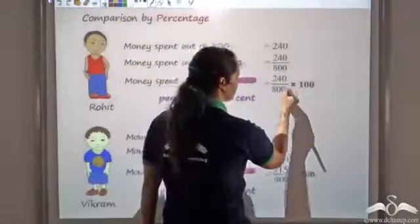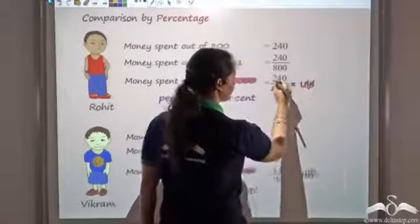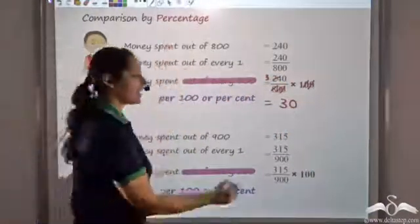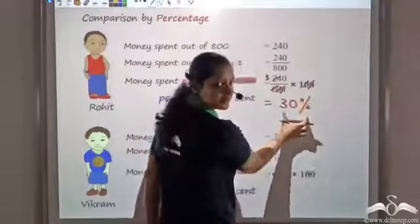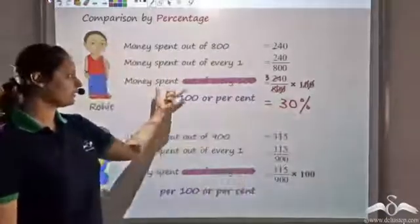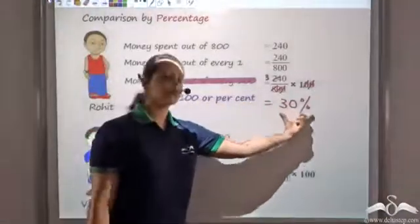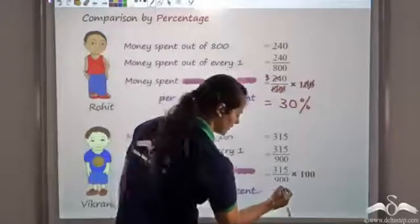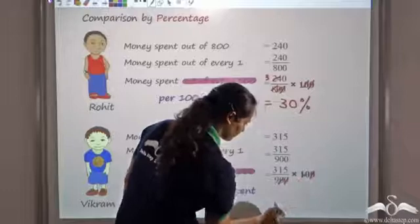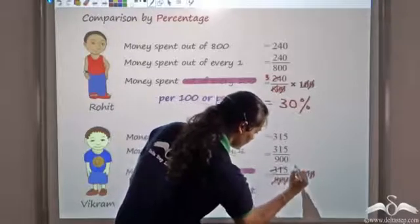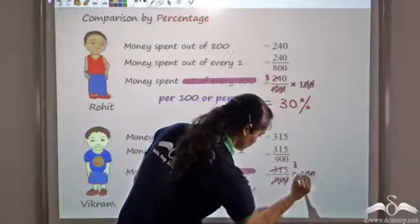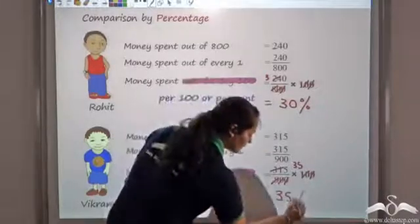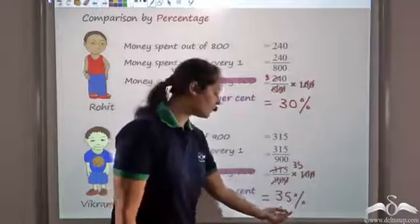Now you can simplify this. For Rohit: 240 divided by 800 times 100 gives 30. For percentage we use the '%' symbol, so this is 30 percent — meaning 30 out of 100, that is what he is spending per 100. Similarly for Vikram: 315 divided by 900 times 100. Since 9 threes are 27, this gives 35 per 100, so 35 percent.